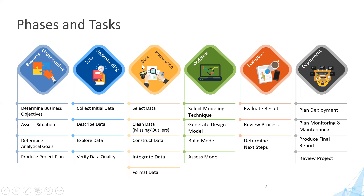Phase three involves data preparation. You can prepare the data through selection of the data and also by cleaning the data. When I say clean the data, in case there are data points which are missing or there are outliers, you can use missing value imputation or you can use box plot to understand about outliers, clean the data and make sure that your data is free from noise. Once the data is prepared, you are good to go as far as building the model is concerned.